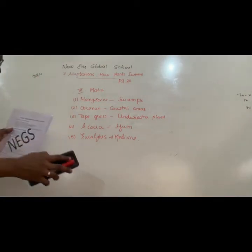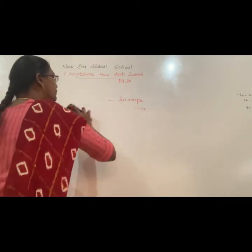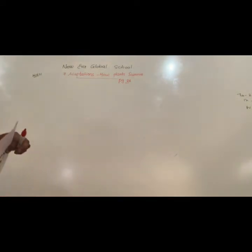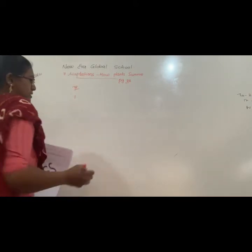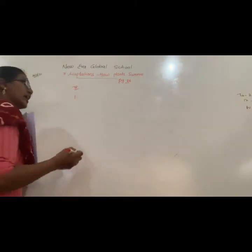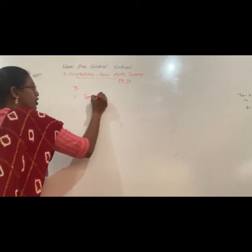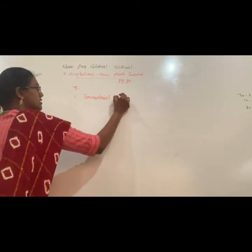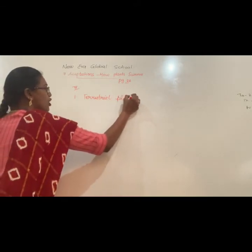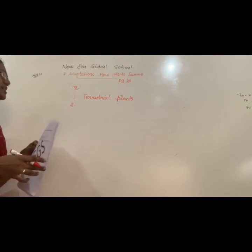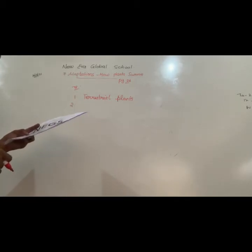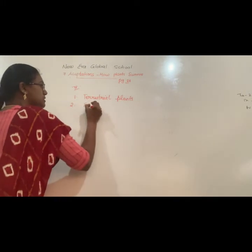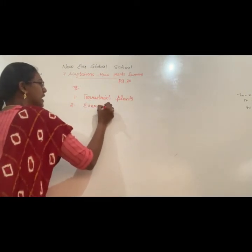Now come to the next one: write one word for the following. Plants that grow on land — as I discussed yesterday, they are called terrestrial plants. Second one: plants having leaves that remain green almost all year — they are called evergreen trees.